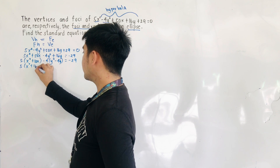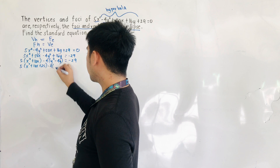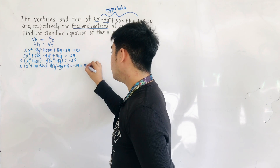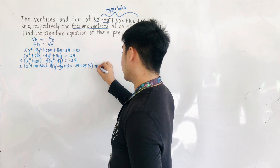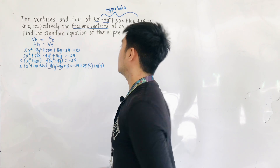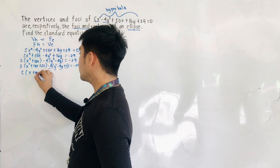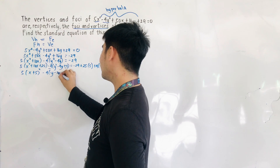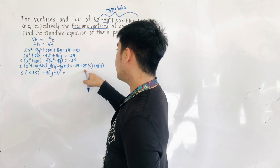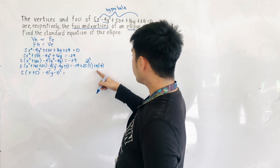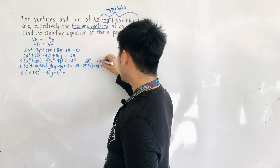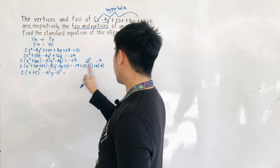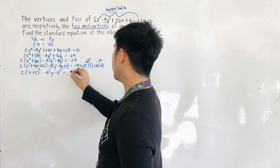Completing the square: 5 times (x² plus 10x plus 25) minus 4 times (y² minus 4y plus 4) equals negative 29, plus 5 times 25, plus negative 4 times 4. Factoring, we get 5 times (x plus 5)² minus 4 times (y minus 2)² equals negative 29 plus 125 minus 16, which gives us negative 29 plus 125 minus 16. Adding these terms, we get negative 45, so 125 minus 45 gives a value of 80.